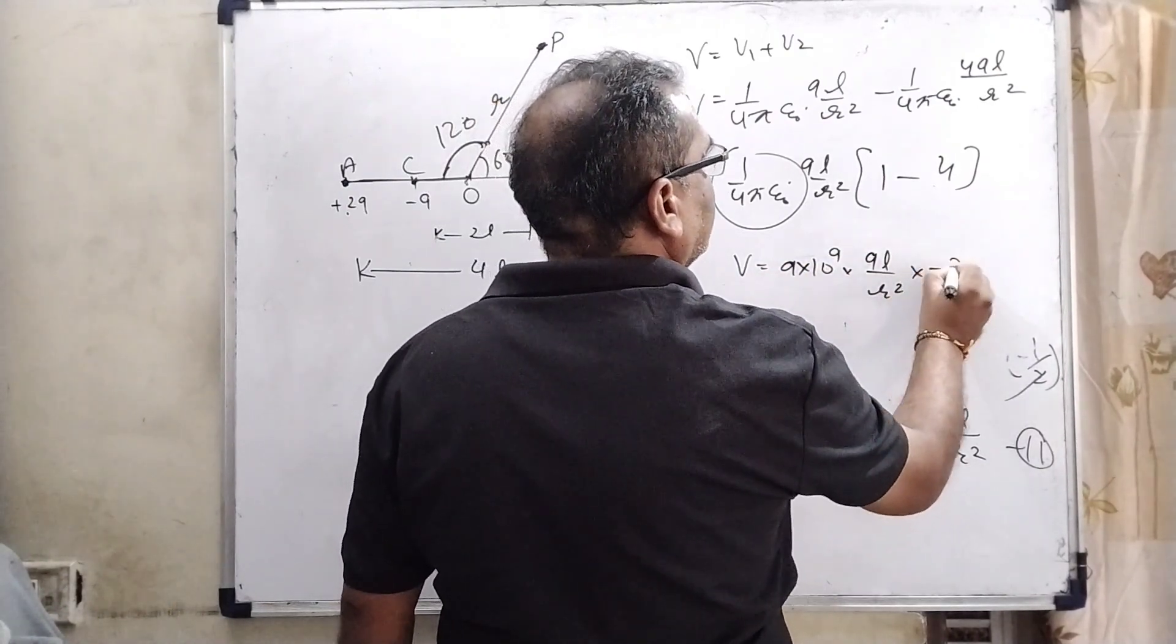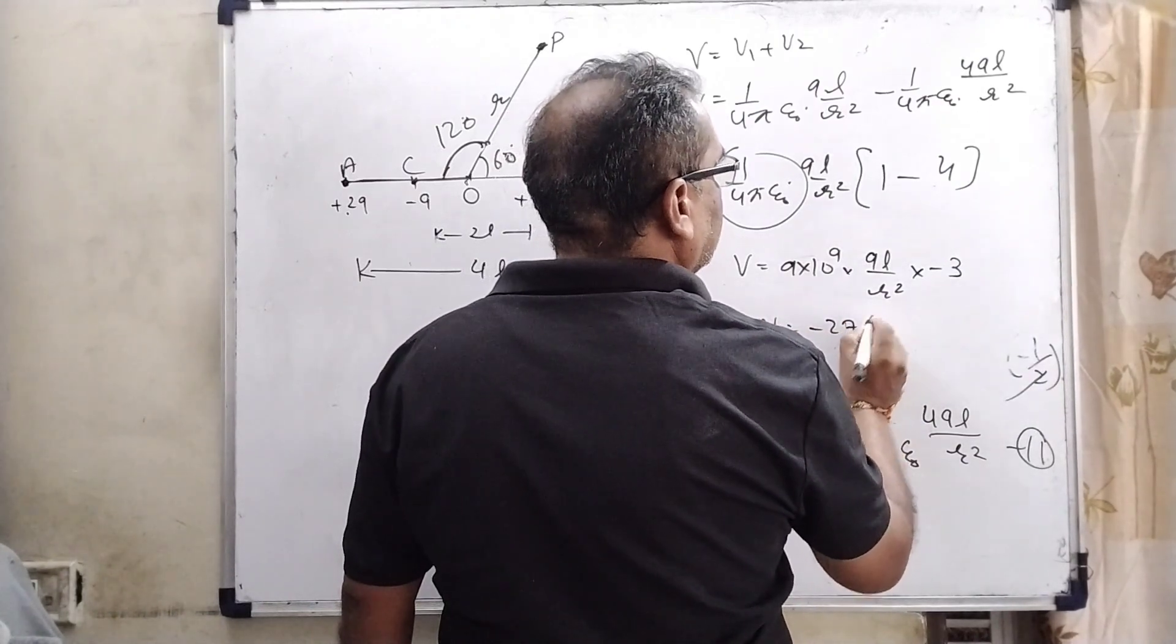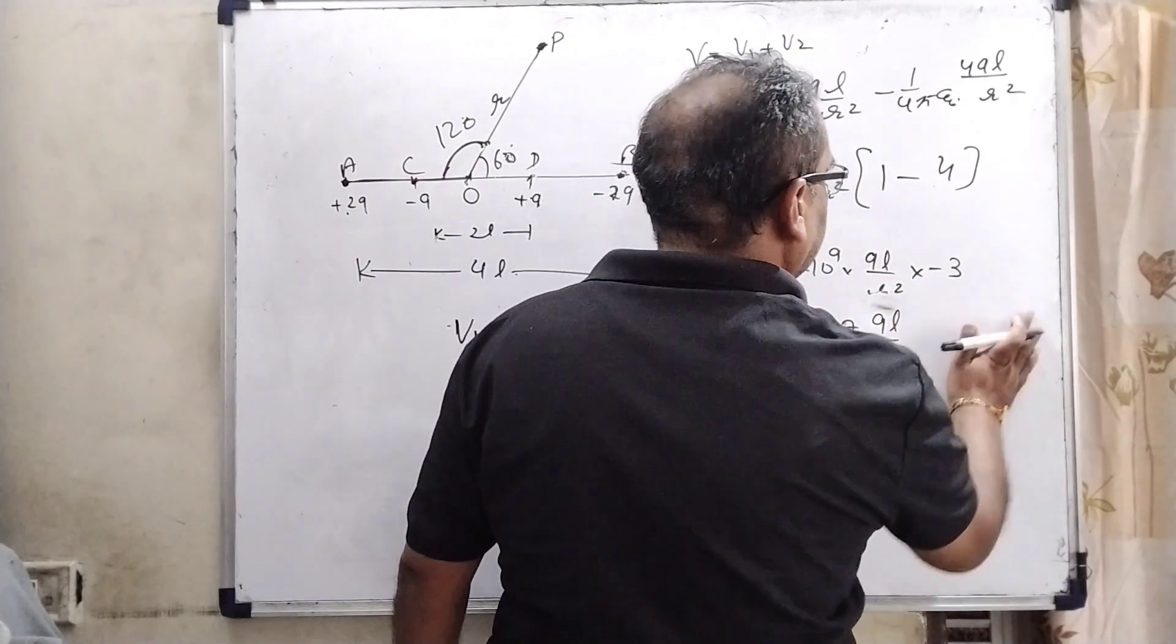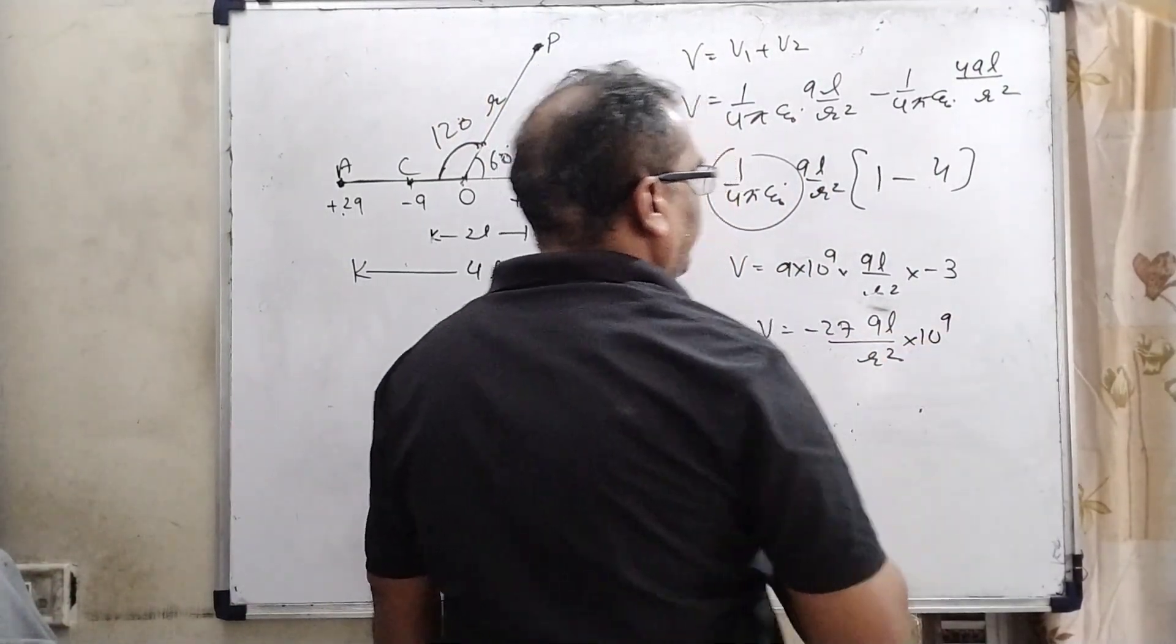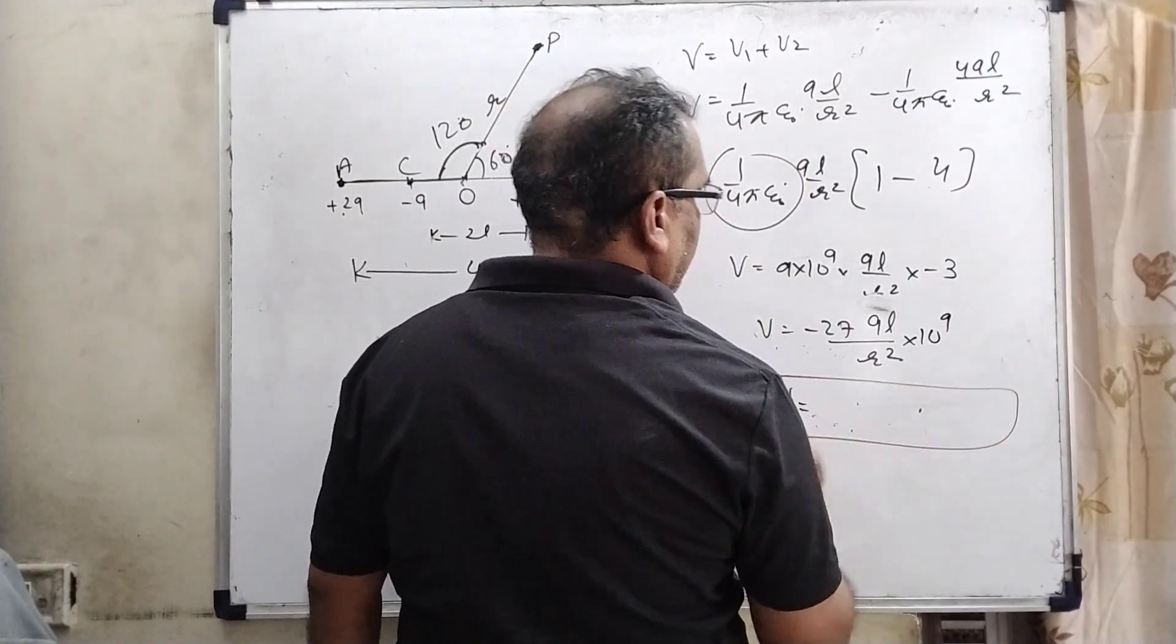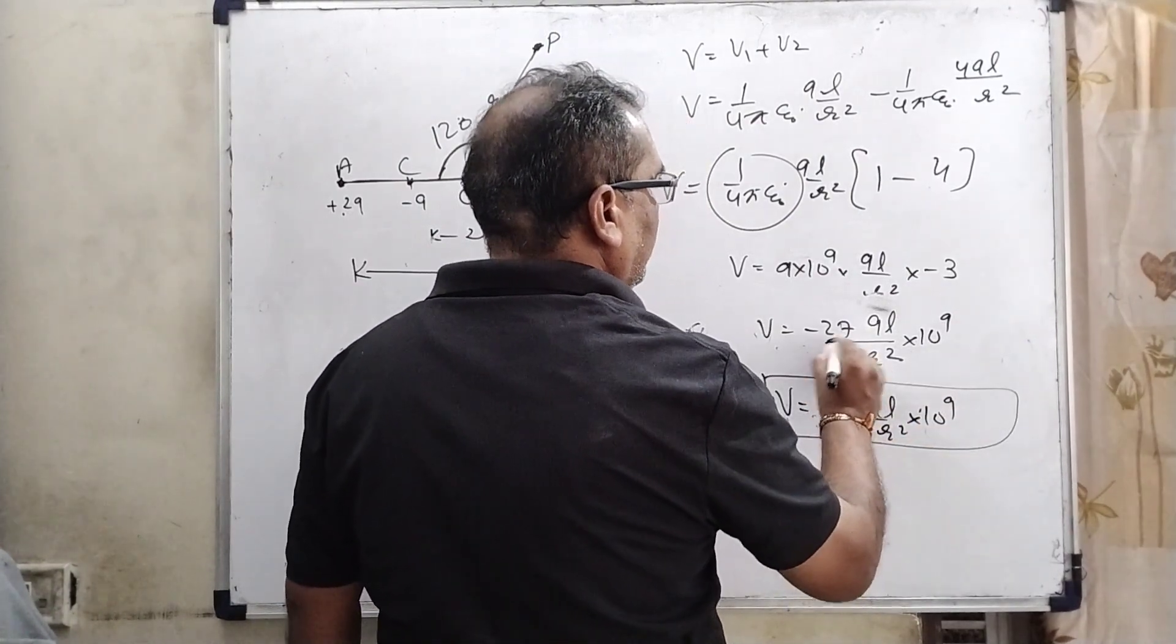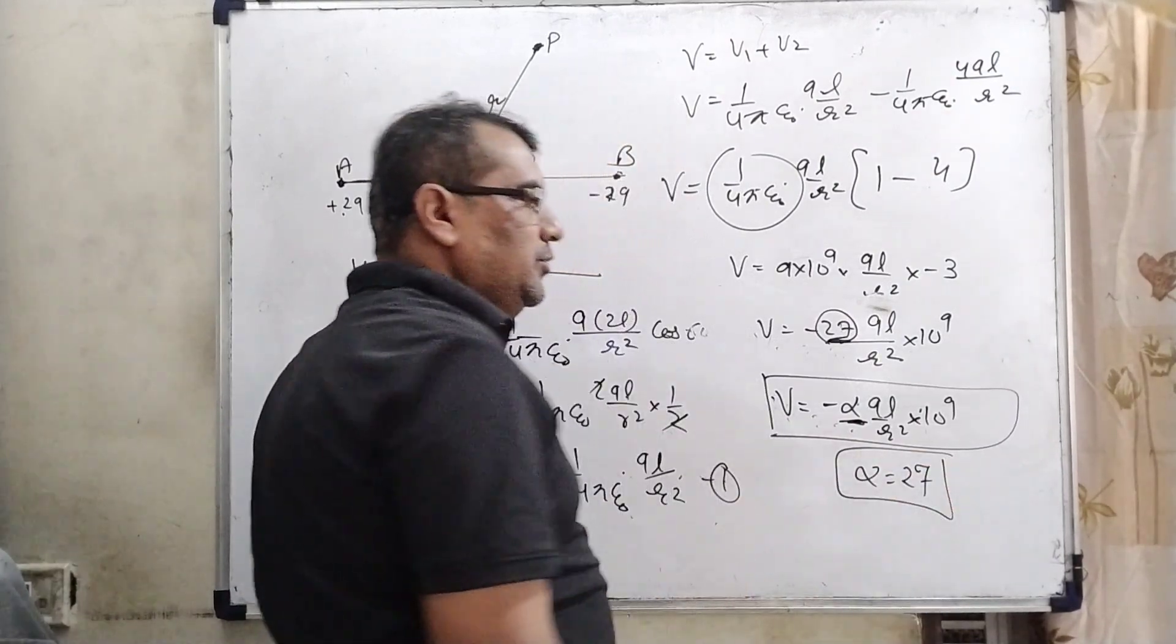So, here this becomes minus 3, then minus 3 QL by R square, 9 into 10 to the power 9. So, minus 27 QL by R square into 10 raised to 9. So by comparing our value that is minus alpha QL by R square into 10 raised to 9, in the place of alpha we are getting 27. So the correct answer is alpha equals 27.